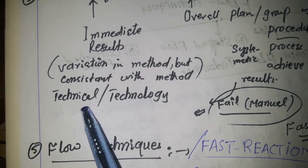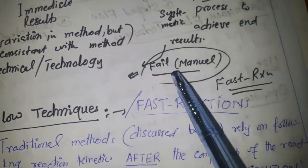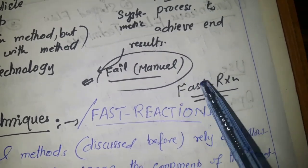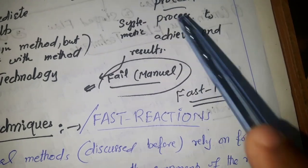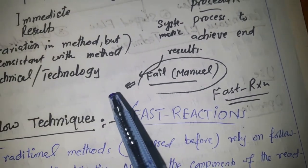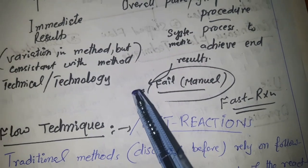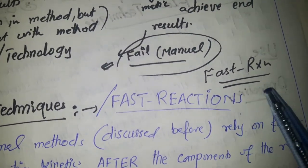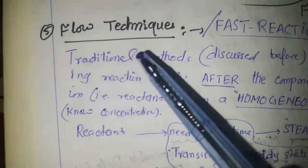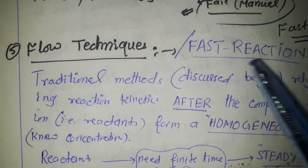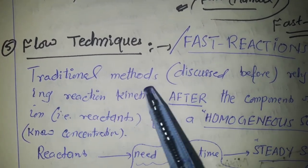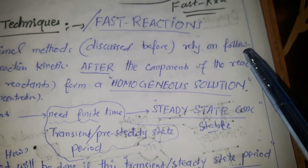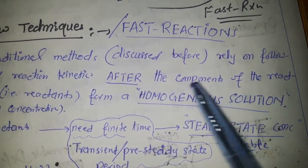Manual methods may fail for fast reactions where we cannot use manual calculation, and advanced techniques are needed to trace the kinetics of those reactions. Such reactions might be in solution phase or in the gas phase. For those kinds of reactions, flow techniques are used, because traditional methods rely on following reaction kinetics after the reactants have formed a homogeneous solution.